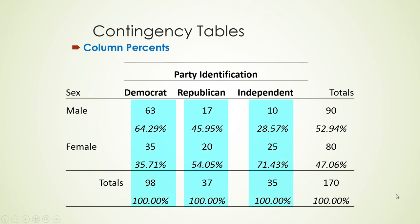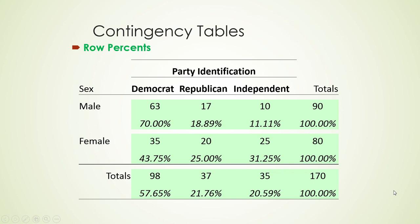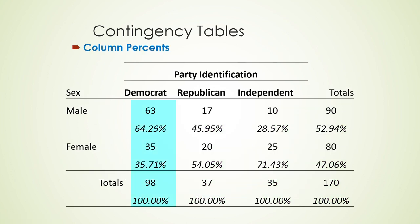Or we could do percents by columns. This answers questions like: what percentage of Democrats are male or female? Of the 98 Democrats, 64% are male and 36% are female. We can do that with any of the other columns as well. With the totals, about 53% of the sample is male and 47% is female. This is the same information — the frequencies are the same — but the percentages are different.